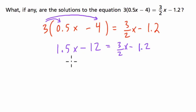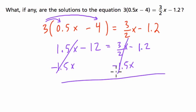Okay, so now I want my x's on the same sides, and I noticed that 3 halves of x is the same as 1 and a half x. So if I try subtracting 1 and a half x from both sides, what happens? Well, the x terms go away, and I have negative 12 equals negative 1.2. But these two things are not equal.